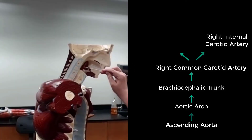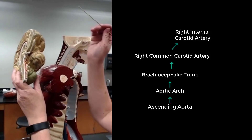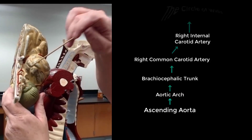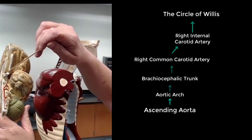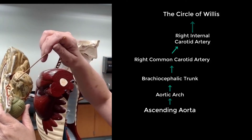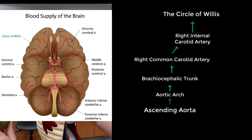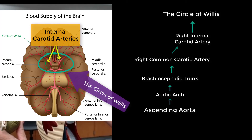The internal carotid artery is going to join with the Circle of Willis — which is right here. This is actually half of the Circle of Willis, so I guess you could call it a semi-circle of Willis — bad joke. Right here is the internal carotid artery, and that's where it joins.